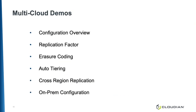These are the multi-cloud demos we have available. First, we have a configuration overview with a HyperStore deployment in the multi-cloud environment. Then we look at storage policies using both replication factor and erasure coding. For moving data outside of HyperStore to a hyperscaler, we have an auto-tiering demo. In a multi-region configuration, we also have cross-region replication. And finally, a configuration demo of HyperStore distributed between both on-prem and the hyperscalers. If you're looking to have more details on these capabilities, I encourage you to take a look at these demos.